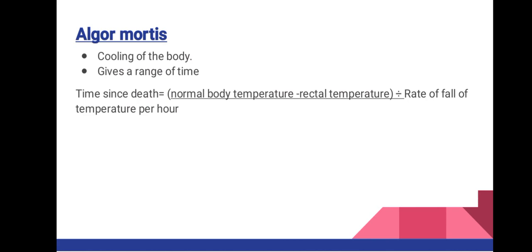Algor mortis is the cooling of the body after death. Body heat falls after death and this gives a range of time, not a specific answer. A body cools about 0.75 to 1.5 degrees Fahrenheit per hour depending on the season and ambient temperature. Time since death using algor mortis is calculated using the formula: normal body temperature minus rectal temperature (also referred to as sub-hepatic temperature), divided by the rate of fall of temperature per hour.